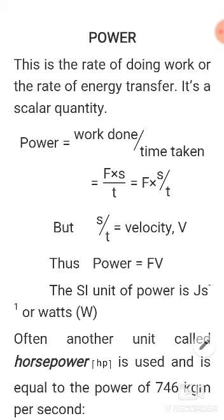But distance over time is speed or velocity for this case. We can easily say that since s over t is velocity, then power becomes FV, where F is force and V is the velocity that body moves with, or the speed that body moves with in a specified direction.